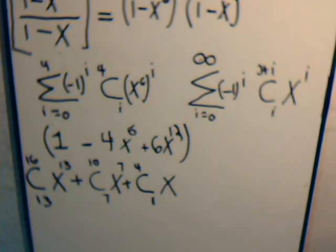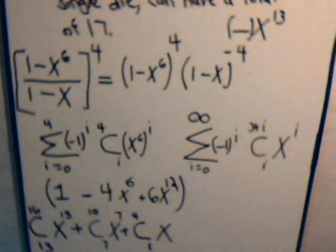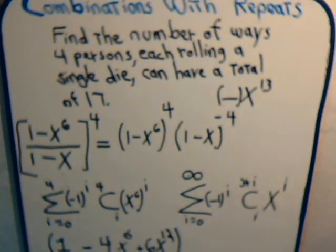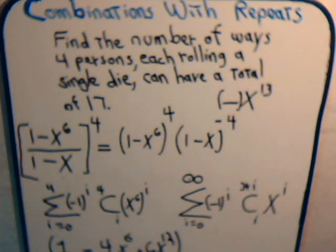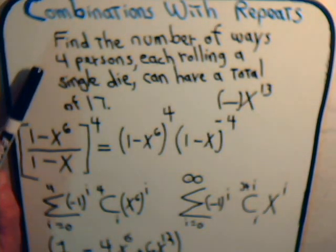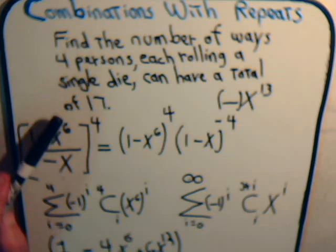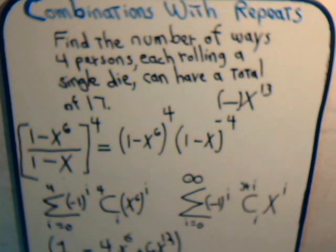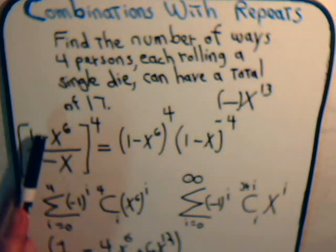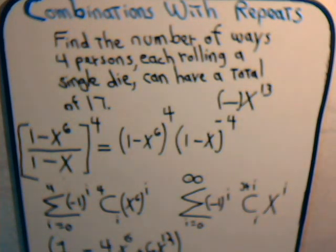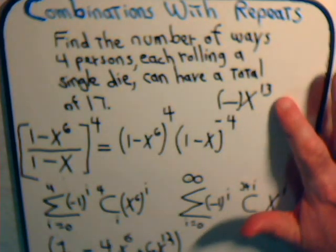Okay, in the previous video we were concerned with this problem. Find the number of ways that four persons each rolling a single die could have a total of 17. And after some manipulations we determined that to solve that problem what we need to do is in this expression here determine what the coefficient is of x to the 13th.